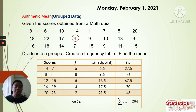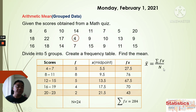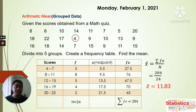To find the arithmetic mean, we use the formula: x̄ = Σfx ÷ n. The sigma of fx is the sum of all f times x products, which is 284. The value of n is the sum of all frequencies, which is 24. So 284 divided by 24 gives us 11.83. Therefore, the mean for the scores collected is 11.83.